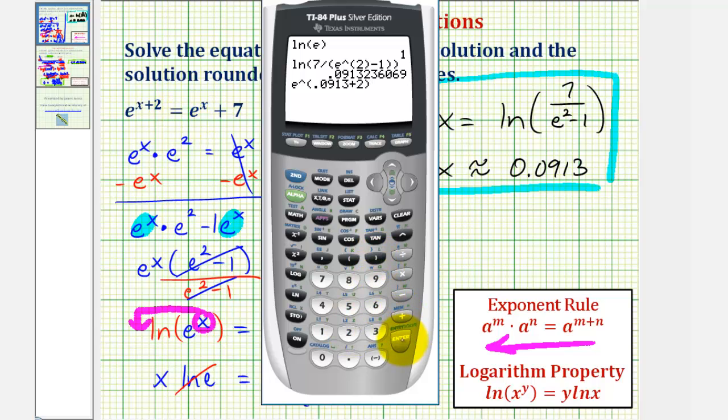this value should be approximately the same as e raised to the power of x, which is 0.0913, close parenthesis, plus 7. Notice how the values are approximately the same. They would be exactly the same if we used the exact solution. I hope you found this helpful.